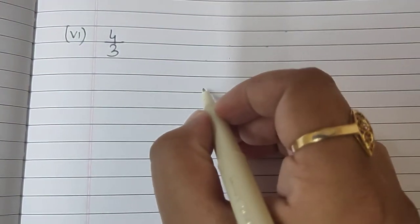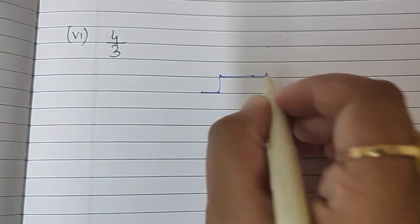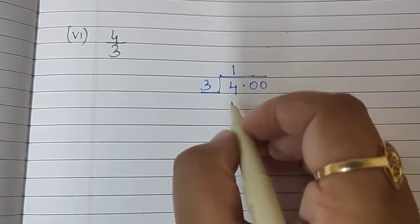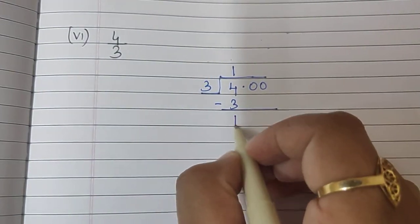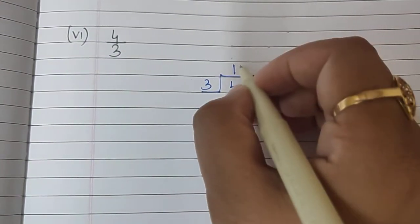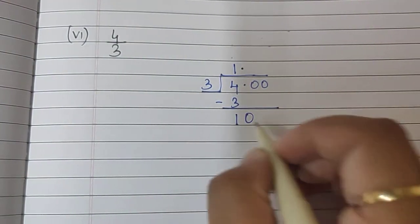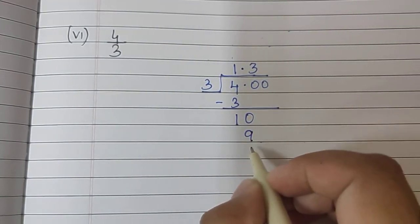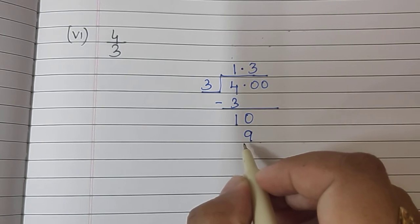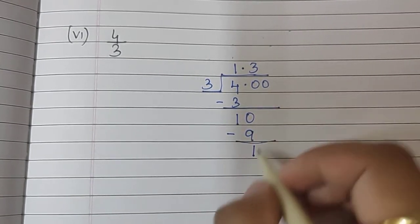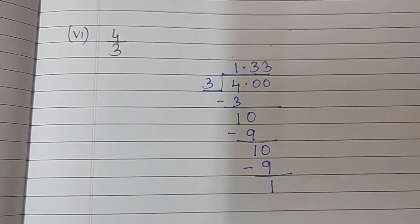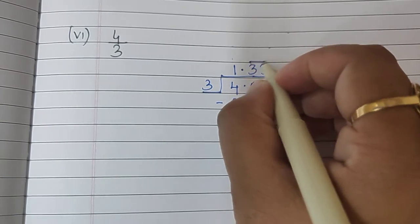The next sum is 4 upon 3. Let's write it. 3 will come here. 4.00, 3, 1's are 3. Remaining 1. We will write the decimal up. Bring the 0 down. 3, 3's are 9. Again, if you see, remaining is 1. We will bring 0 down. 3, 3's are 9. And it will keep on repeating. So, the number 3 here is recurring.